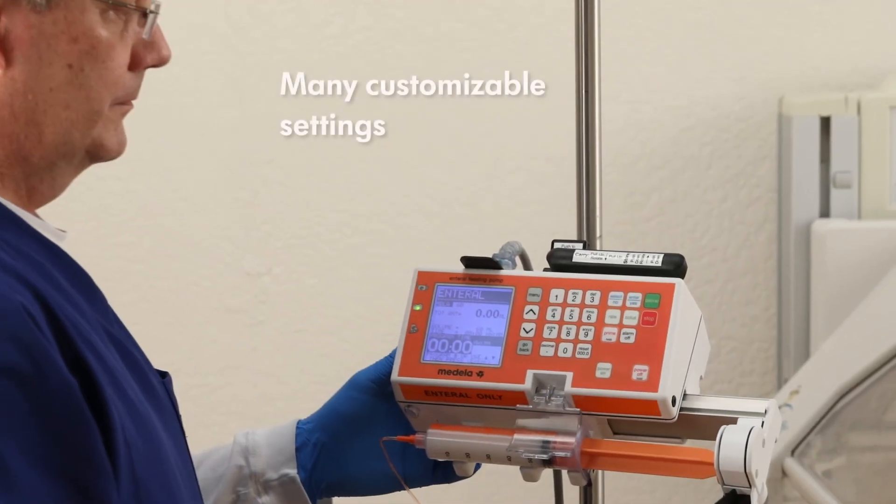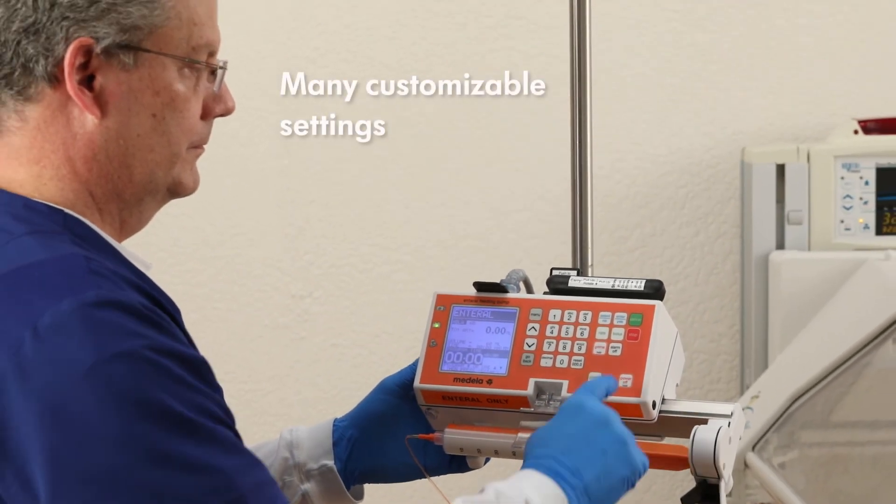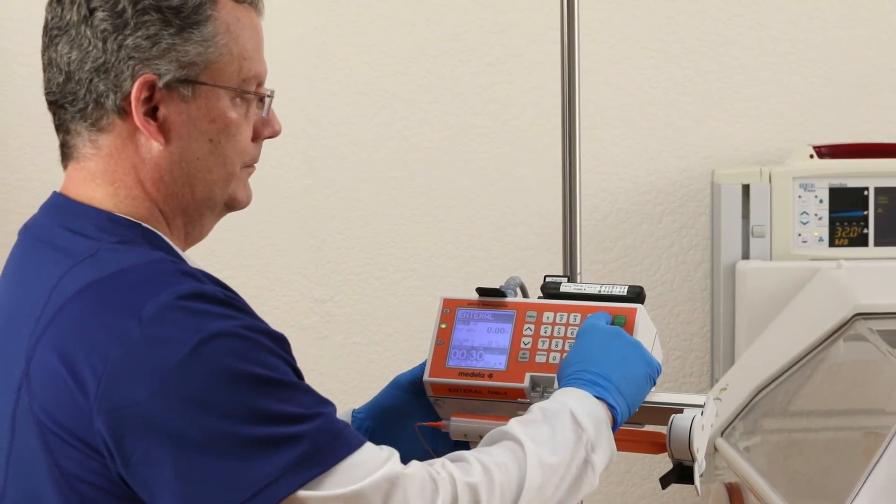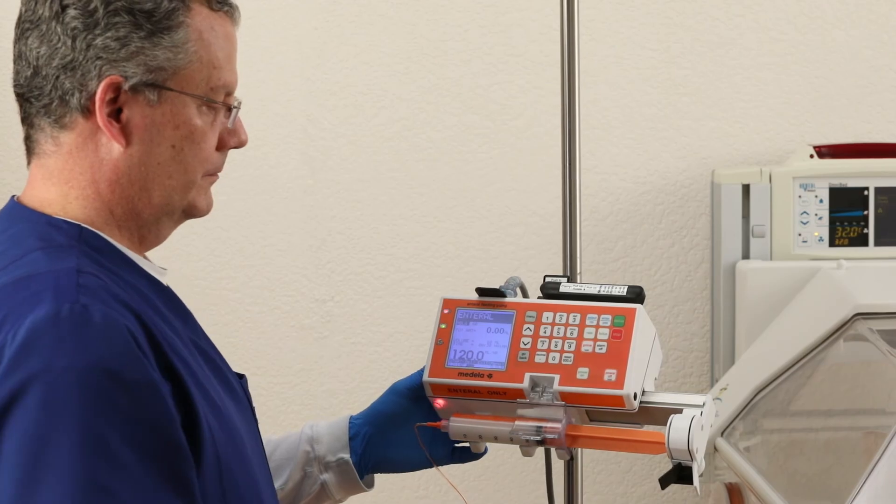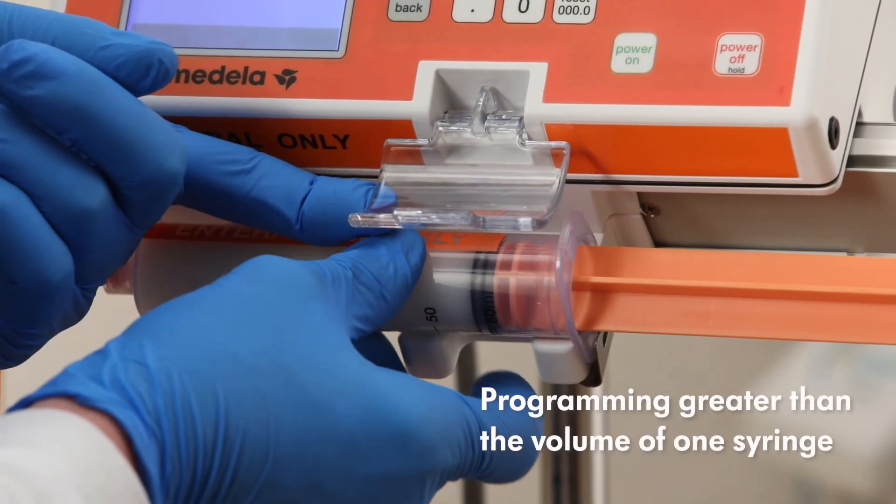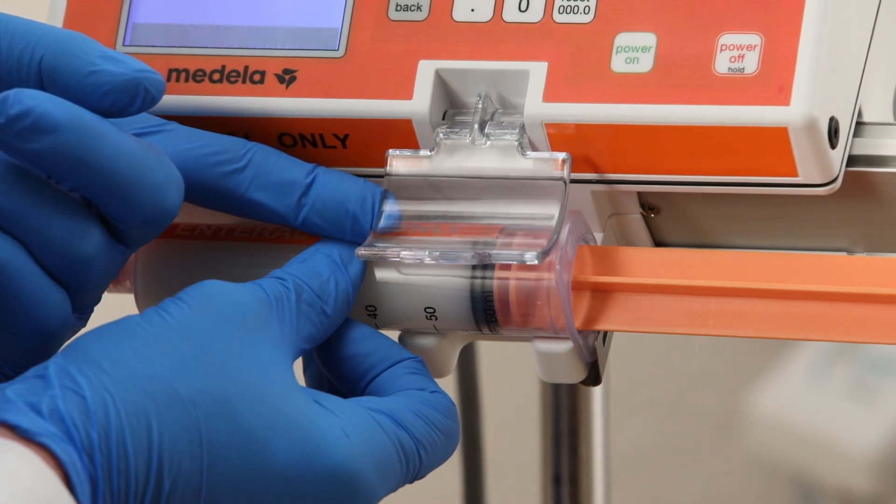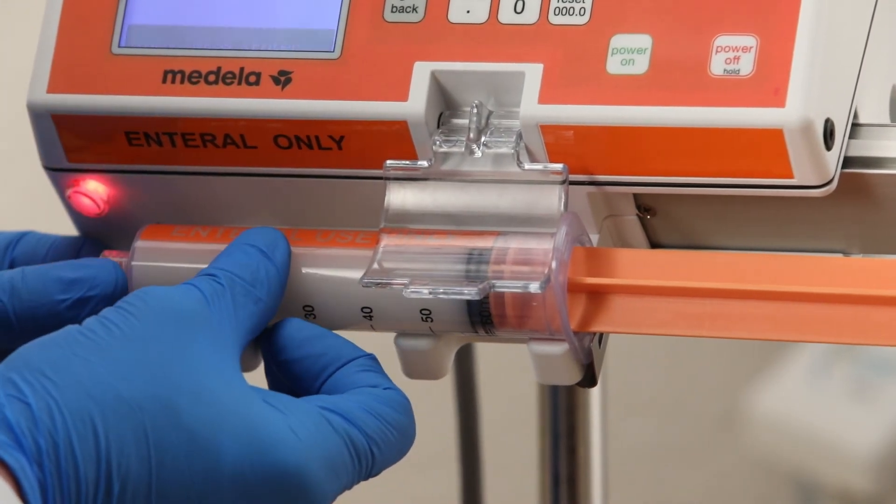The infusion pump has many customizable settings and additional safety prompts can be activated. The syringe pump has default settings that can be changed by working with Biomed. The pump will allow you to program greater than the volume of one syringe for larger feeds. Simply change the syringe and use the enter and deliver buttons when prompted.